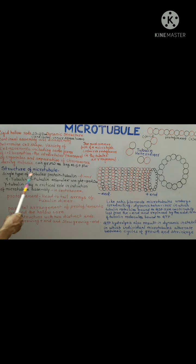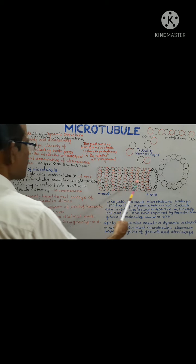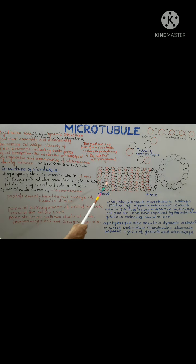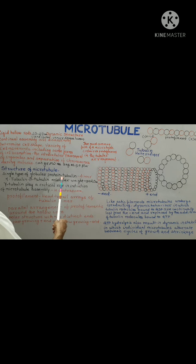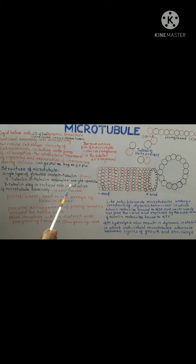Regarding the structure of microtubules: a microtubule can grow as long as 50 micrometers. The microtubule consists of a single type of protein known as tubulin. Tubulin is a dimer of alpha tubulin and beta tubulin, which are closely related, with a molecular weight of about 50 kD each.